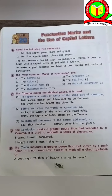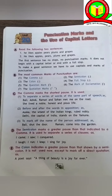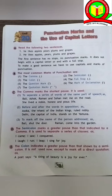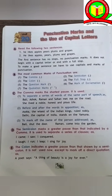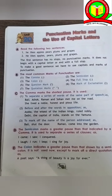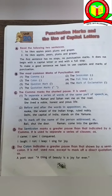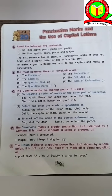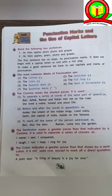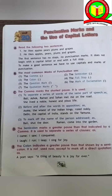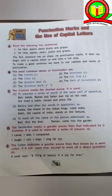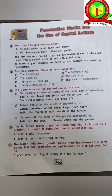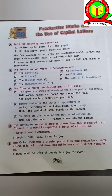Read the following two sentences: 'He likes apples pearls pears and grapes.' This is looking like an odd sentence. The correct version is: 'He likes apples, pears, plums and grapes.' Now this is perfect. Because in this sentence, proper punctuation marks and capital letters have been used.